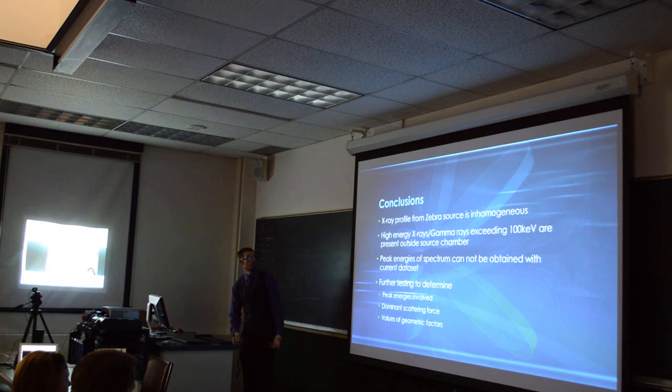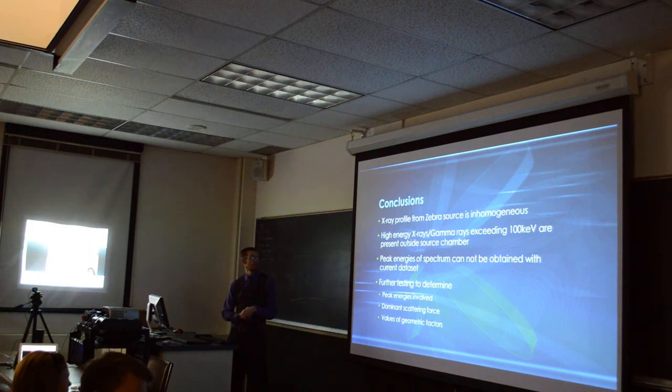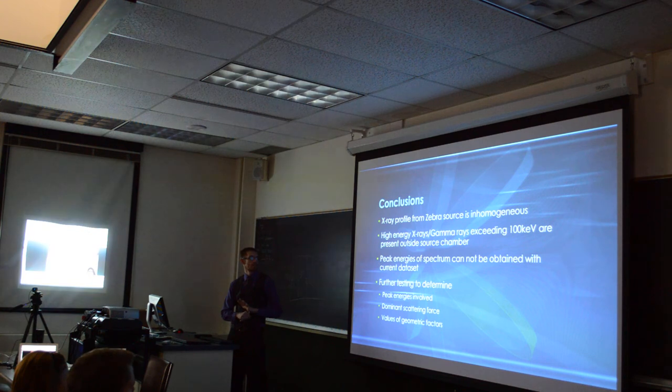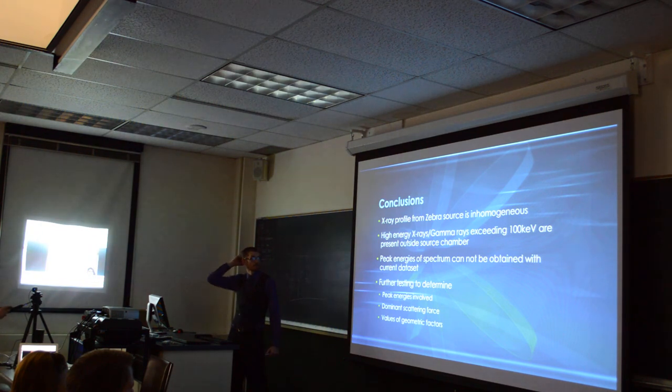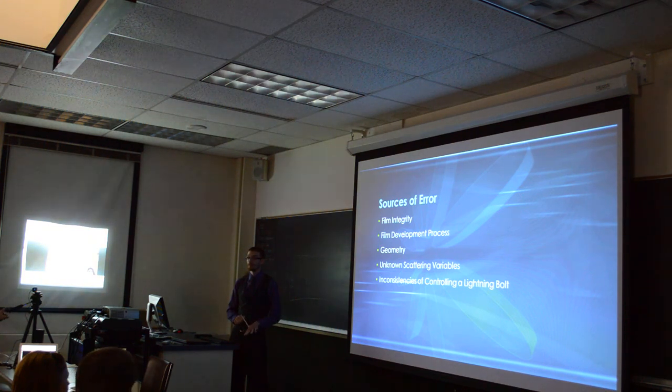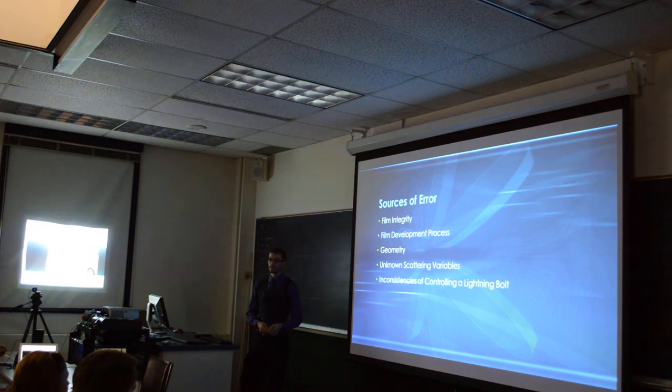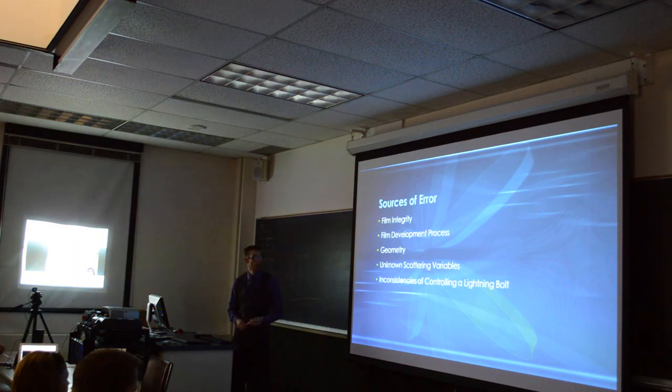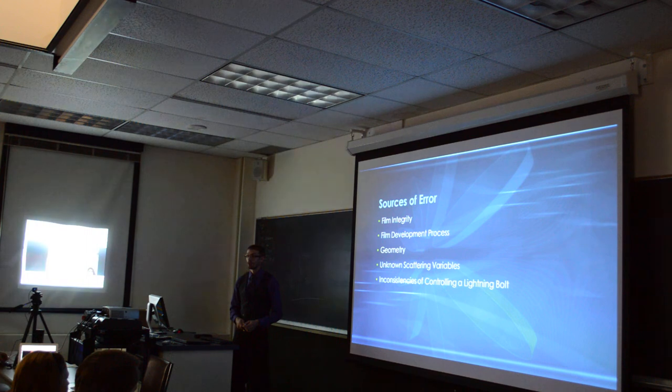The conclusions are: the profile is inhomogeneous. We have high energy X-ray gamma, or we have higher X-ray gamma rays exceeding 1 MeV present outside the chamber. Peak energies of the spectrum cannot be obtained with the current data set. Further testing is needed to determine peak energies involved, dose at scanning force, and values of geometric factors. We've already started talking about different testings that we can do using different films, different processing of the film using RCF maybe instead of using manual processing, and eliminate that as an error source. Finding known scatter values to eliminate different types of scattering, to use different shielding and stuff like that so we can kind of narrow down the energy wavelengths.